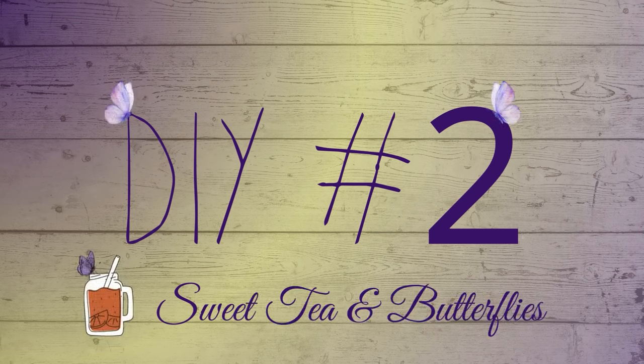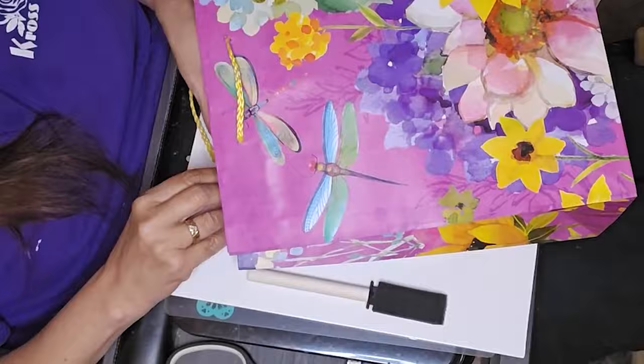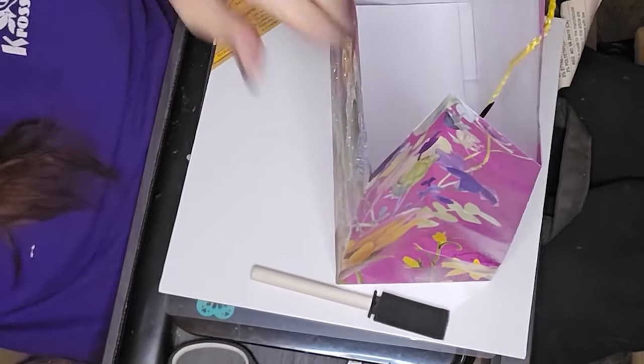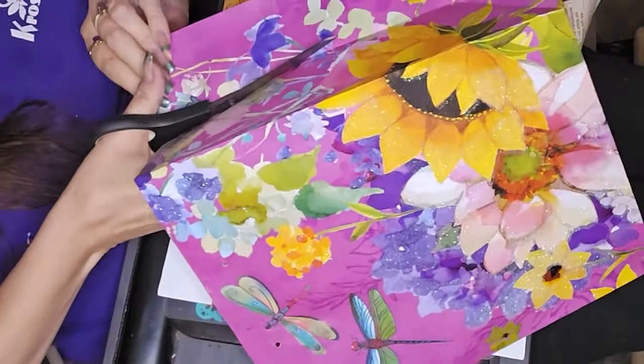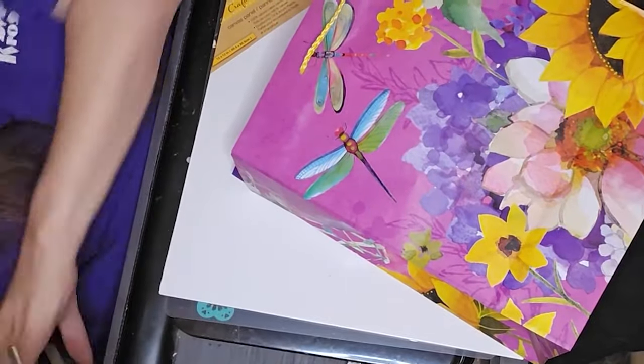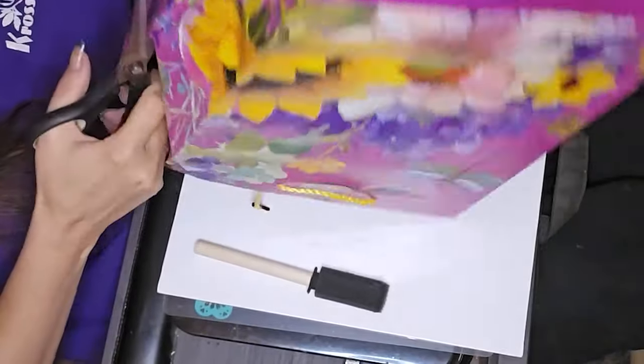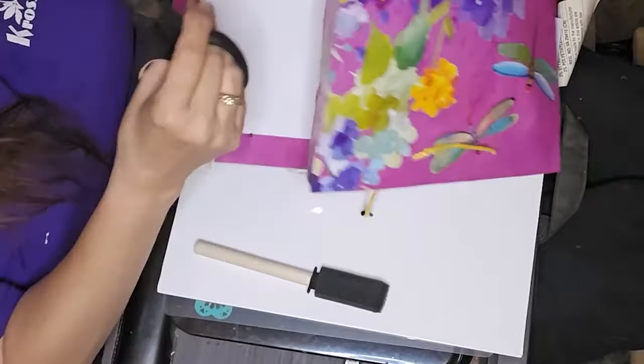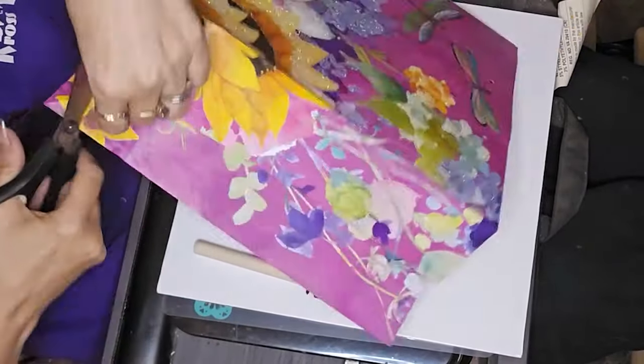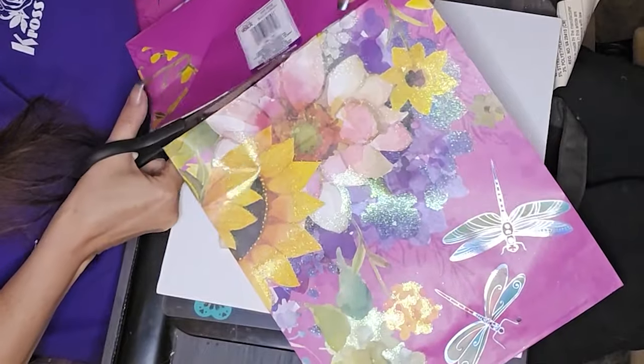Here is DIY number two. We had to use a gift bag, so I have a ton of Christmas gift bags, but I was not doing a Christmas video, so I went looking for a gift bag. I liked this one well enough - it's got a lot of pretty spring and summer like print on it with the flowers and the dragonflies. I just got one of those decent-sized canvases from Dollar Tree, and that's what I put the bag on. You'll see here in a minute that the bag is just a hair too short for the canvas, but I found a workaround for that.